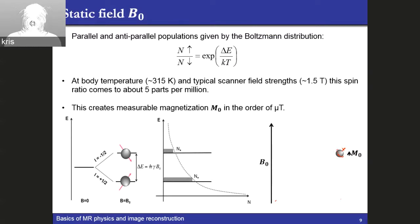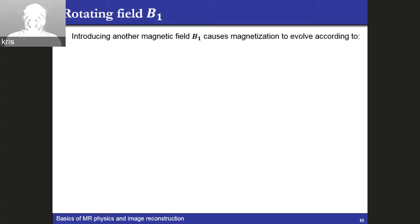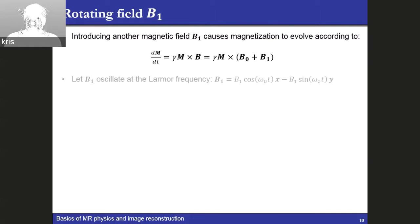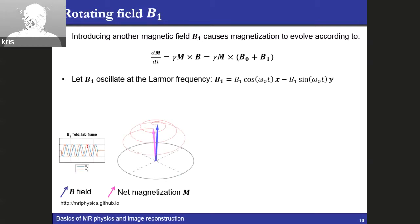We'll be applying a very strong B0 field on the order of Tesla to produce a very small magnetic field on the order of microtesla. This M0 field is aligned with the large B0 field, which we cannot easily measure. But if we introduce another magnetic field — the B1 field — the evolution of magnetization will be given by a cross product. If this B1 field is rotating at the Larmor frequency, so it's circularly polarized, the magnetization will spiral down into the transverse plane.